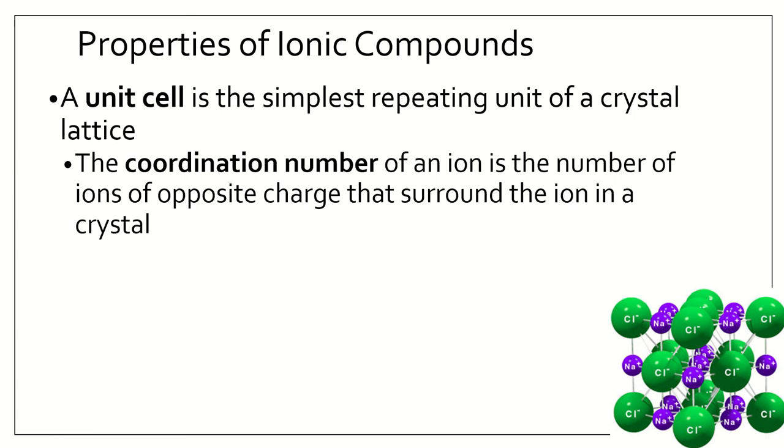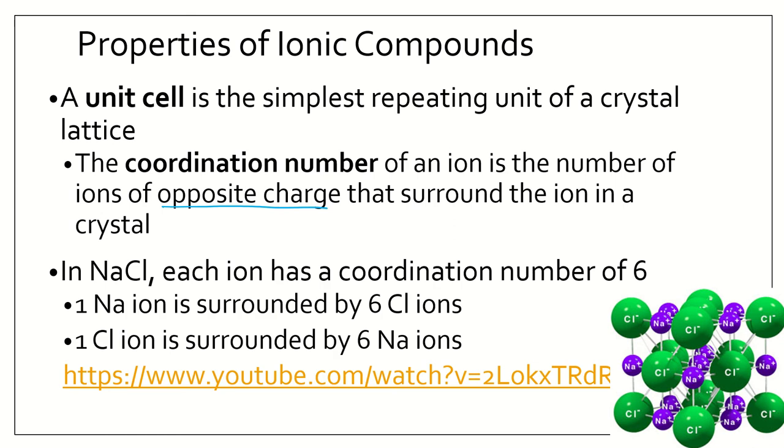So a unit cell is the simplest repeating unit of a crystal lattice. And a coordination number of an ion is the number of ions of opposite charge that surround the ion in a crystal. So in NaCl, so if you look here at the NaCl diagram, let's look at the sodium here in the middle. So this is one unit cell. So in NaCl, each ion has a coordination number of 6. One sodium ion is surrounded by 6 chlorines. So if we look here, we have our 1 sodium, and it's touching 1, 2, 3, 4, 5, 6 chlorines. And if we were to keep building this structure, the chlorine would be touching 6 sodium ions. And we will look at better graphics of this, as you can see here with the link, in class.